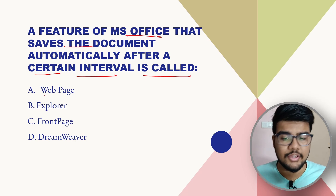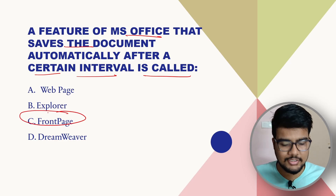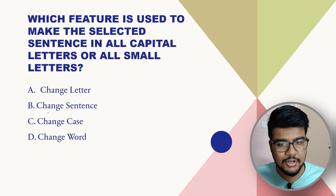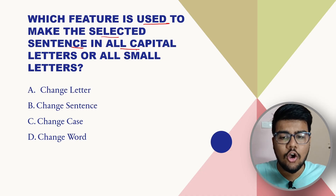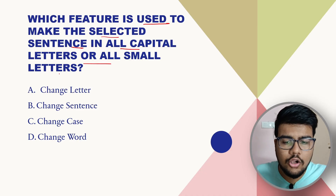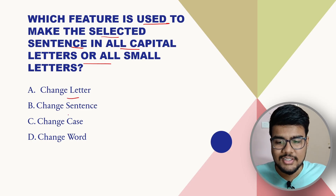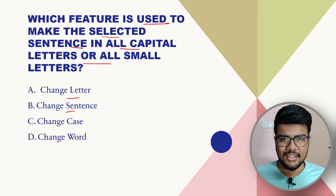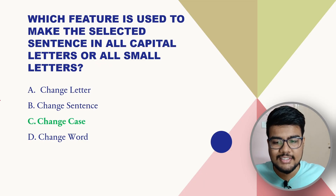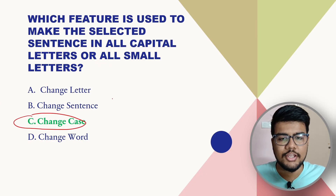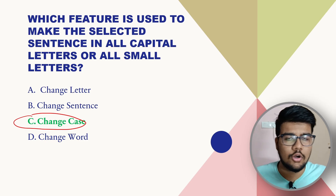The answer to the AutoSave question — it's Front Page according to the options shown. Next: which feature is used to make the selected sentence in all capital letters or all small letters? The options are Change Letter, Change Sentence, Change Case, and Change Word. The correct answer is Change Case, which lets you toggle between all capital letters and all small letters.